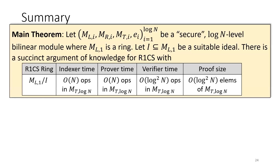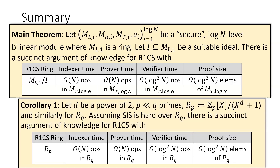As a summary of the results: our main theorem is a very general and abstract succinct argument over general bilinear modules and a particular ring, with succinct verification cost of O(log²N). Instantiating that using ring-SIS, we get a lattice-based succinct argument, and there are other choices of instantiation as well.